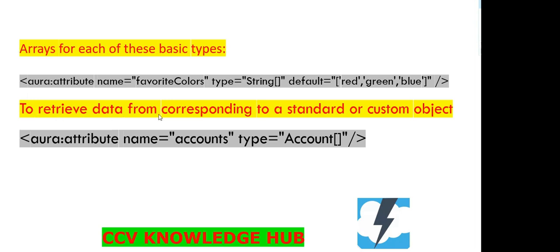If you want to retrieve data corresponding to standard or custom objects, the syntax is: aura:attribute name equal to 'accounts', where Account is the standard object. You can also use your custom object instead. Type equal to Account with array brackets.